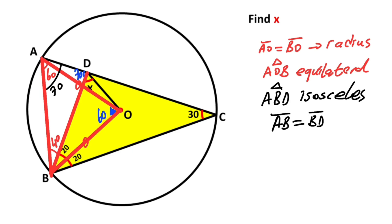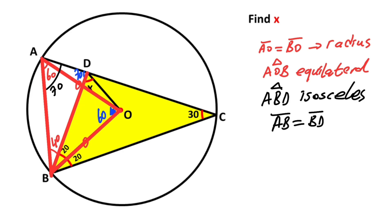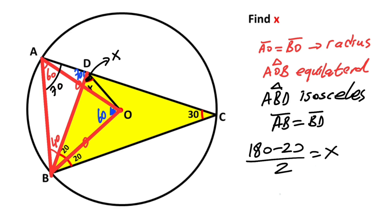Now focus on triangle OBD. You can see that triangle OBD is also an isosceles triangle. Angle x is here. Since the apex angle is 20 degrees, we get (180 − 20) ÷ 2 = x, so x equals 80 degrees.